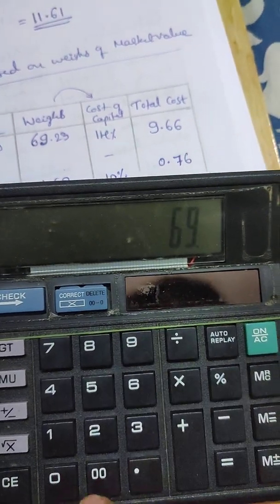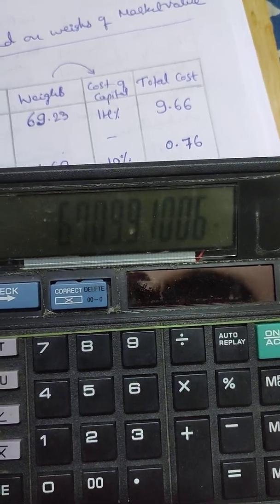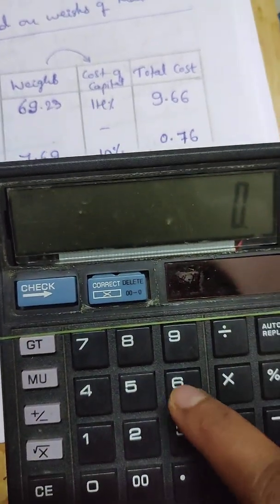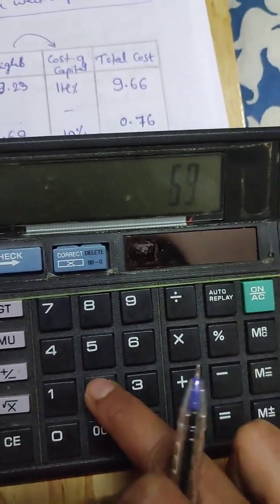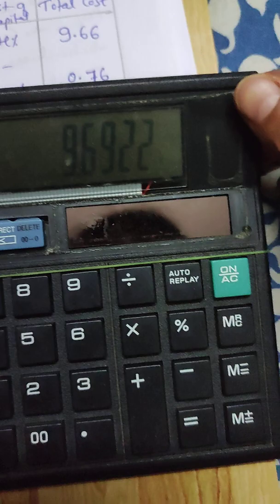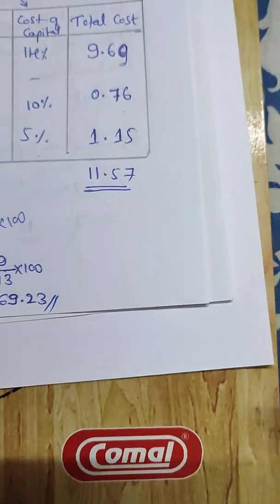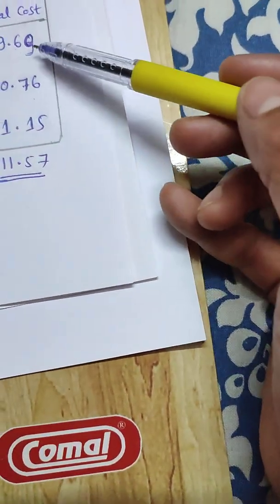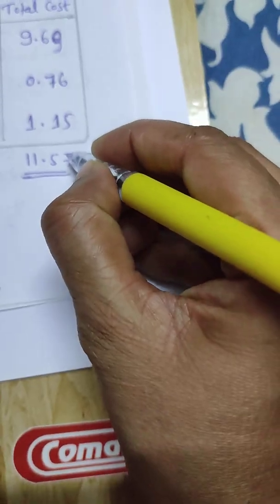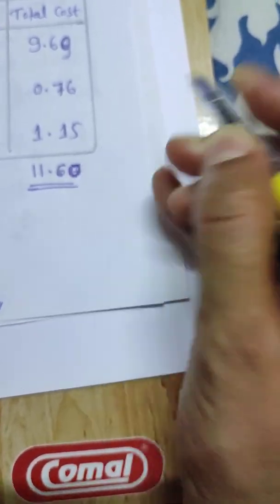69.23 into 14% equals 9.69. So the total market value weighted average cost of capital comes to approximately 11.6.